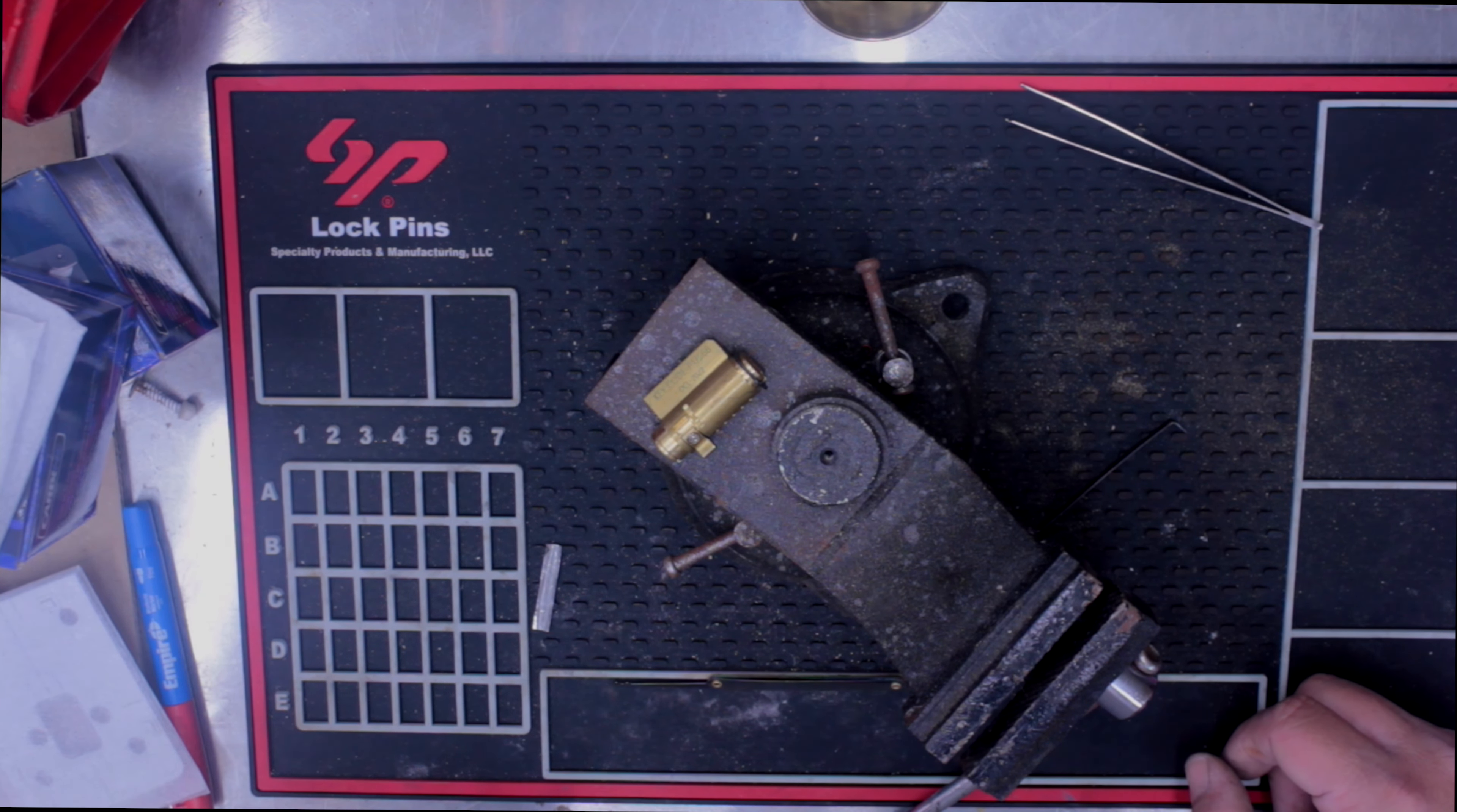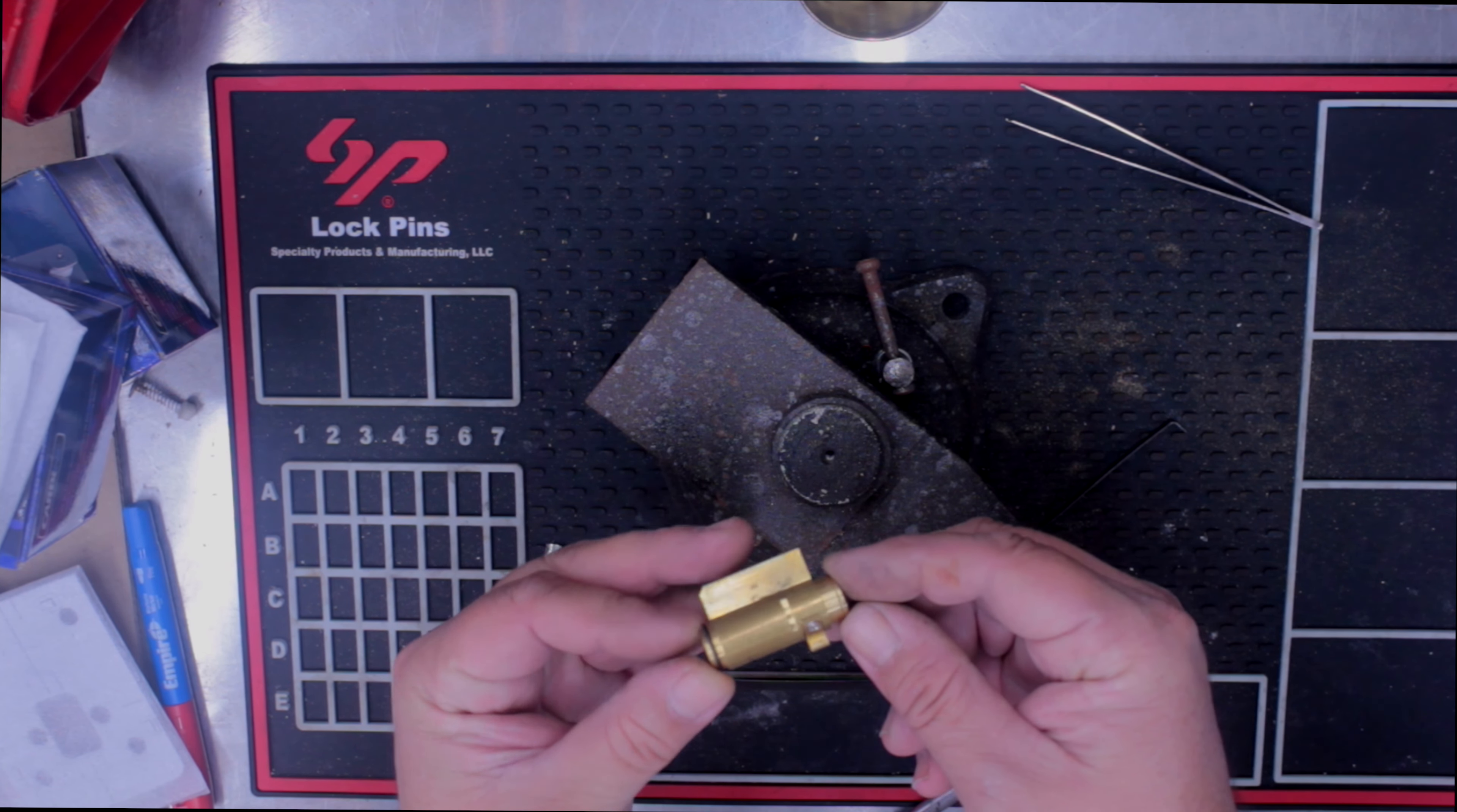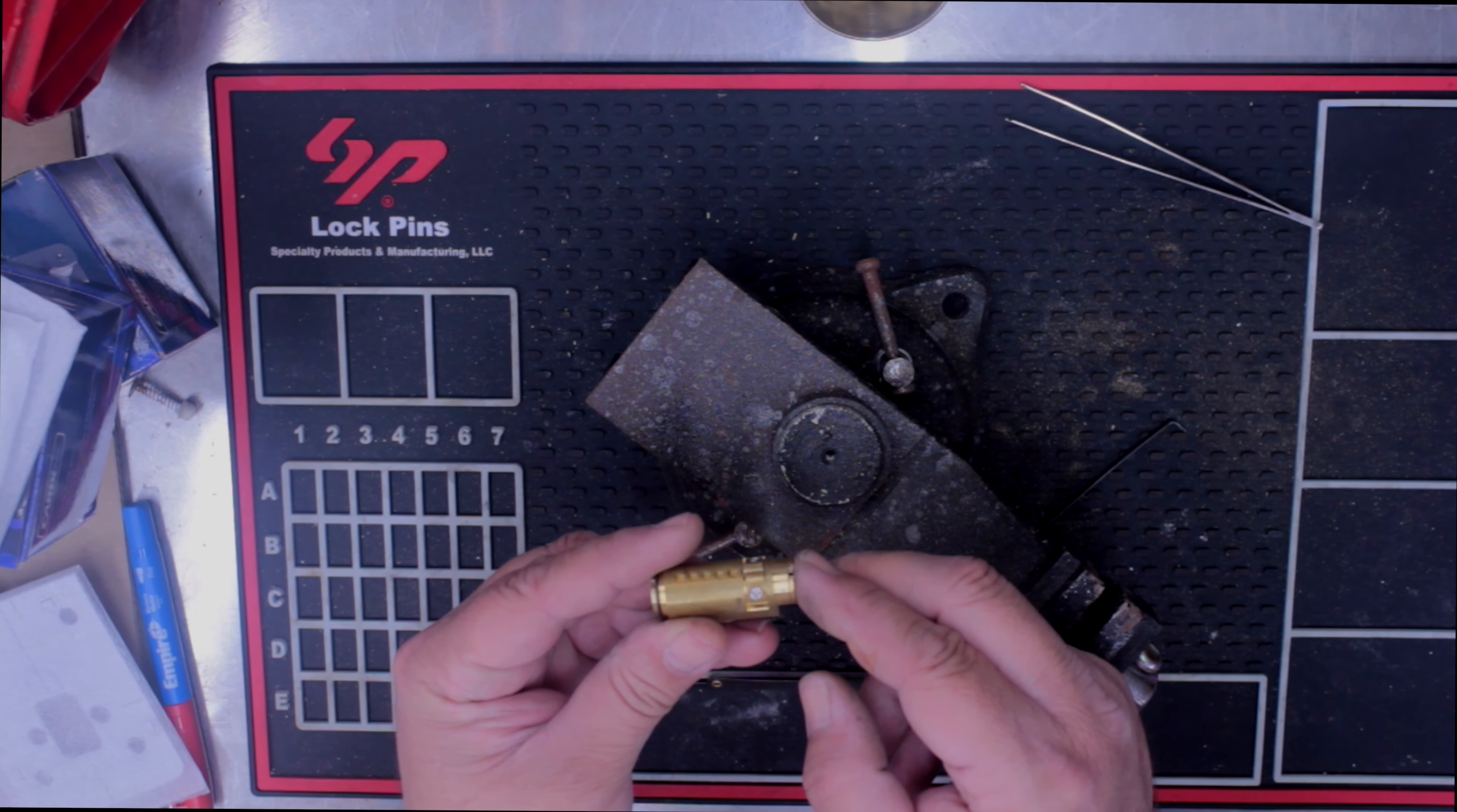Welcome to another video from Dr. Lock. We have something unusual on the bench and that is a P.O. Box lock, and as you can see they're different. Counting the pins: one, two, three, four, five. Five pins.